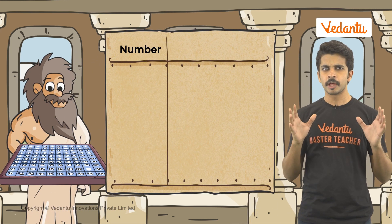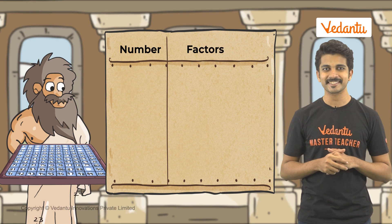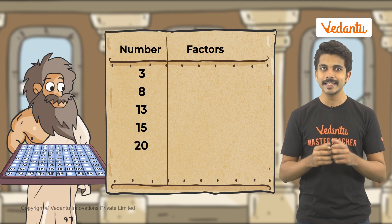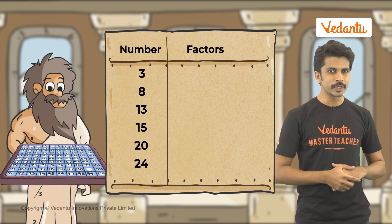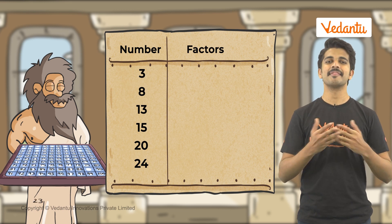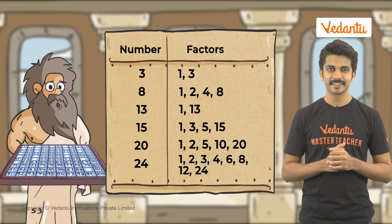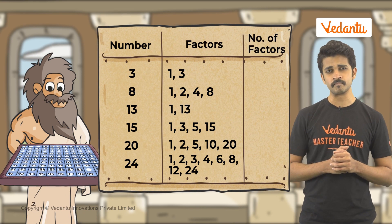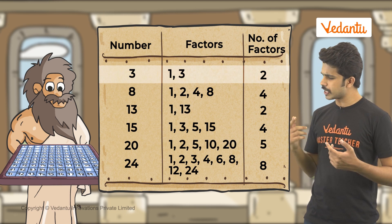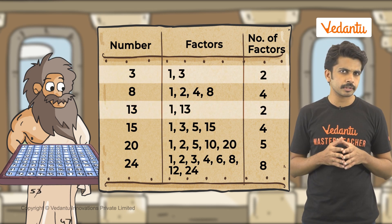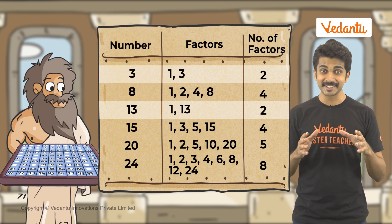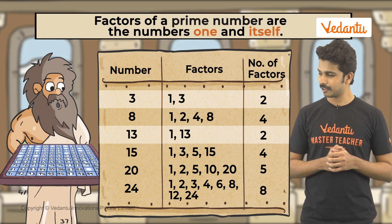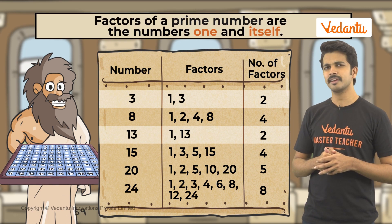Why don't we pick some random numbers and look at their factors. We have 3, 8, 13, 15, 20, 24. Can you guess their factors? And these are their factors. Now, let's count the number of factors of these numbers. The numbers 3 and 13 have only 2 factors. These factors also have a pattern — they are 1 and the number itself.